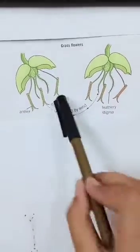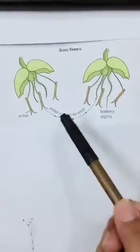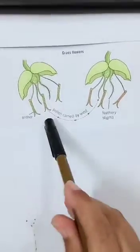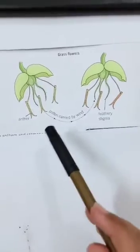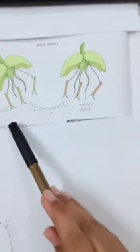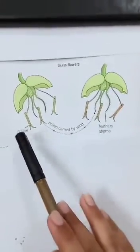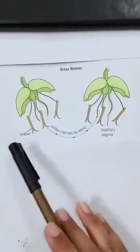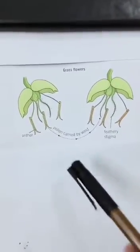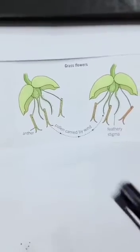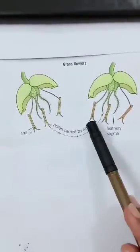Now, pollination by wind. The pollen of some flowers is carried not by insects but by the wind. Instead of being sticky to enable them to attach to the body of an insect, the grains are smooth and very light so that they can be blown over long distances by air currents. Grasses are wind pollinated.